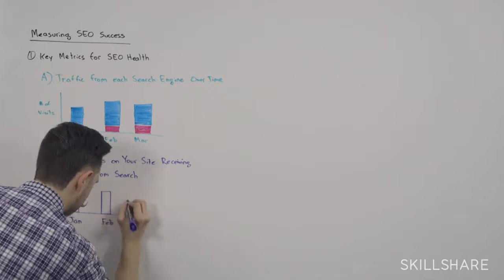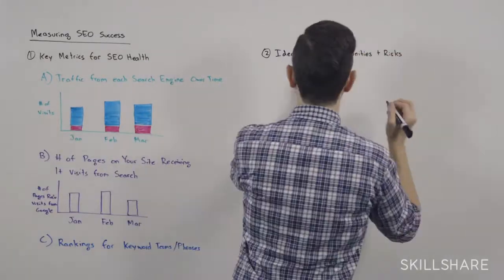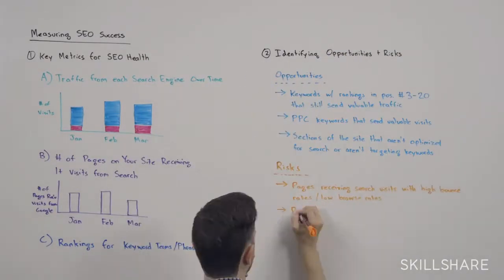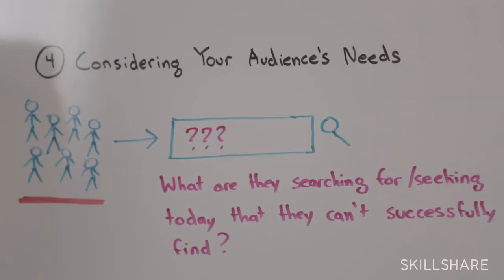No matter what content management system you've got or whether you built your own system, this set of lessons will apply to your work. That's one of the nice things about SEO — it's not different for every different type of site. It can be applied universally. The fundamentals can be applied universally, and we will talk through a few different strategies for different types of sites: e-commerce versus a business landing site versus a local site.